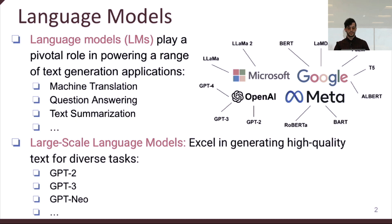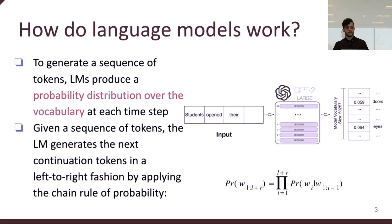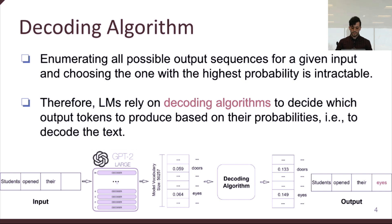This paper focuses on open-ended text generation. Language models provide a probability distribution at each time step over the whole vocabulary set. Given a sequence of tokens, the language model generates the next likely token in a left-to-right fashion by applying the chain rule of probability. The question is how language models pick the best token at each time step — that's where decoding algorithms come into play. Enumerating all possible output sequences is not feasible due to the large number of combinations.